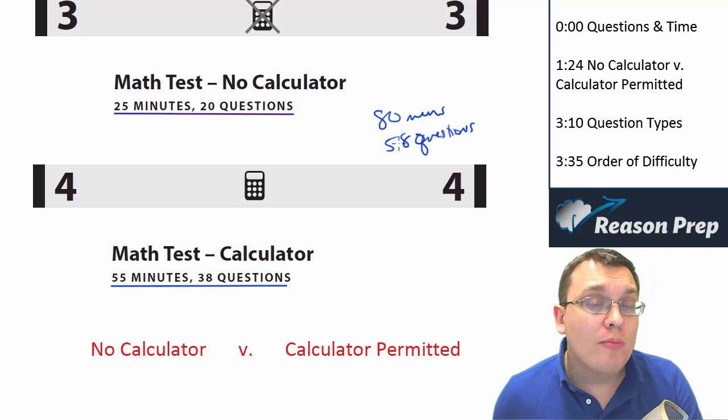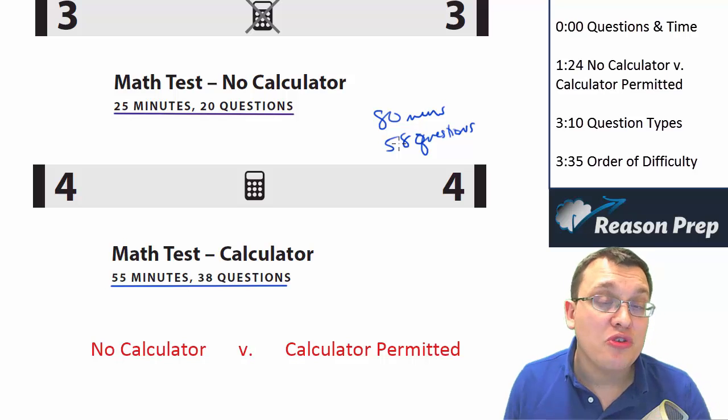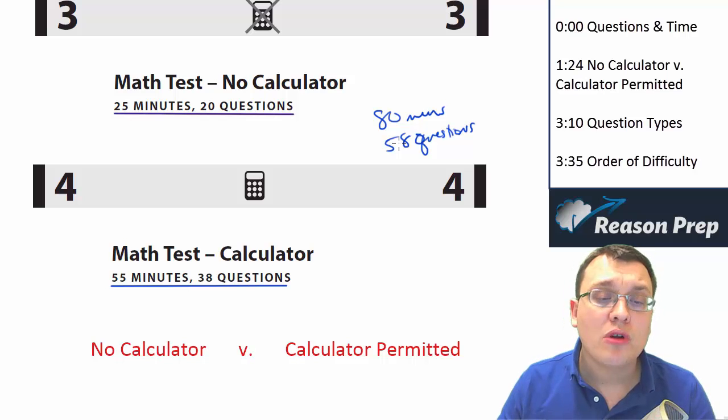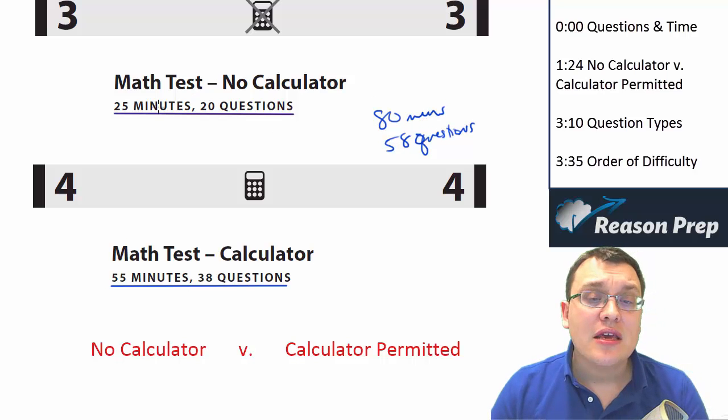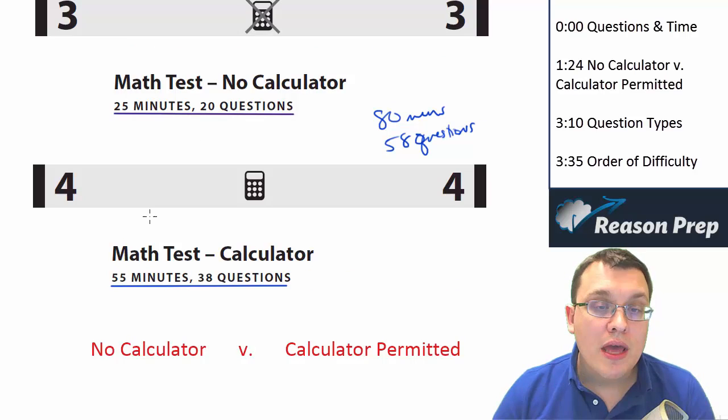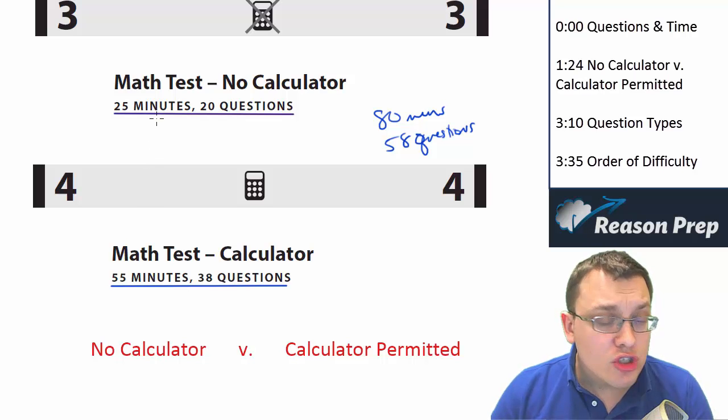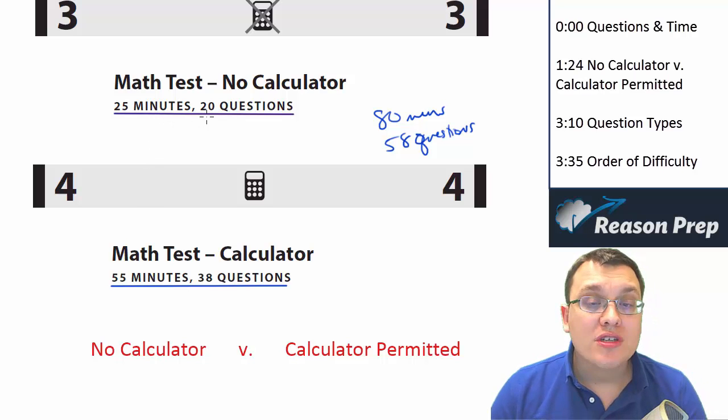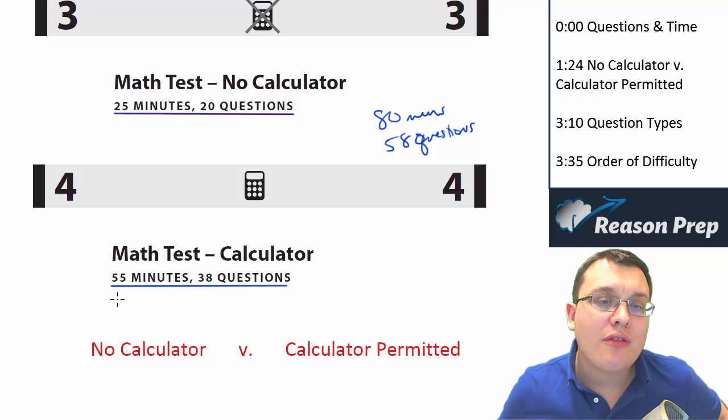The pacing for the test - we'll talk more about how you can save time and use your time effectively in later videos, but I do want to talk about the pacing or the timing of these two tests, given the number of questions in the time allotted and the fact that you have a calculator for one and not for the other. If you just look at the raw numbers, you have more time for the questions in test four than you do in test three. 20 questions, 25 minutes versus 38 questions, 55 minutes. You do the math on that, you've got more time per question for test four. However,